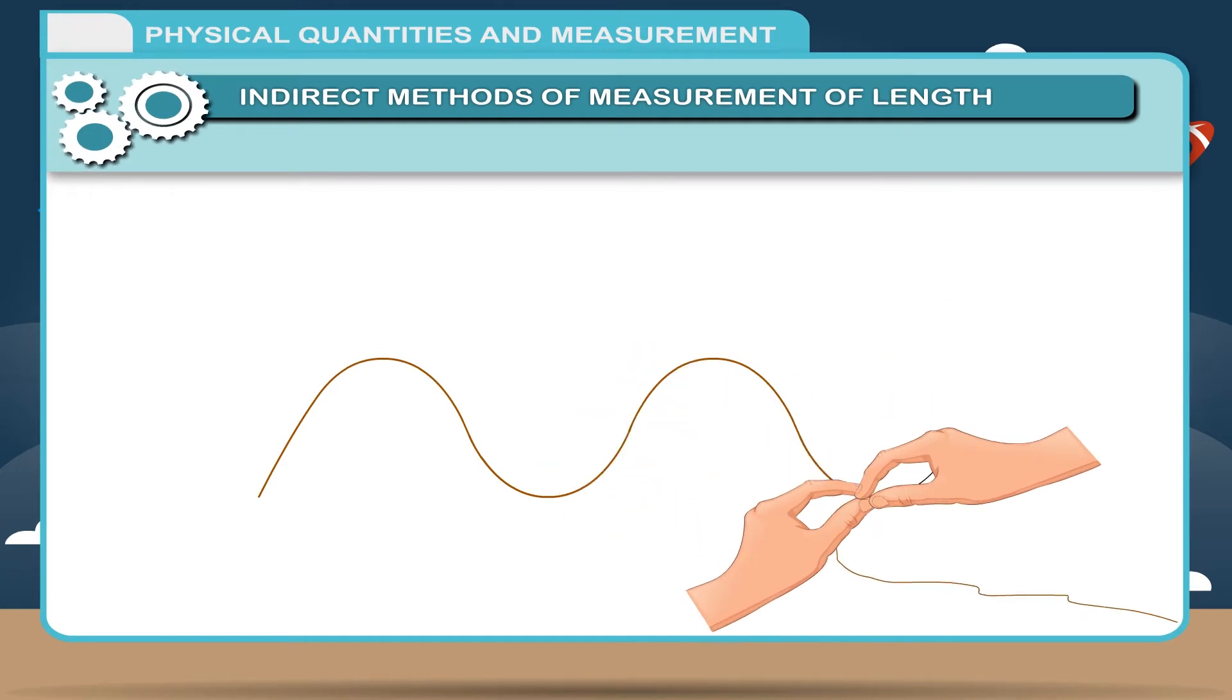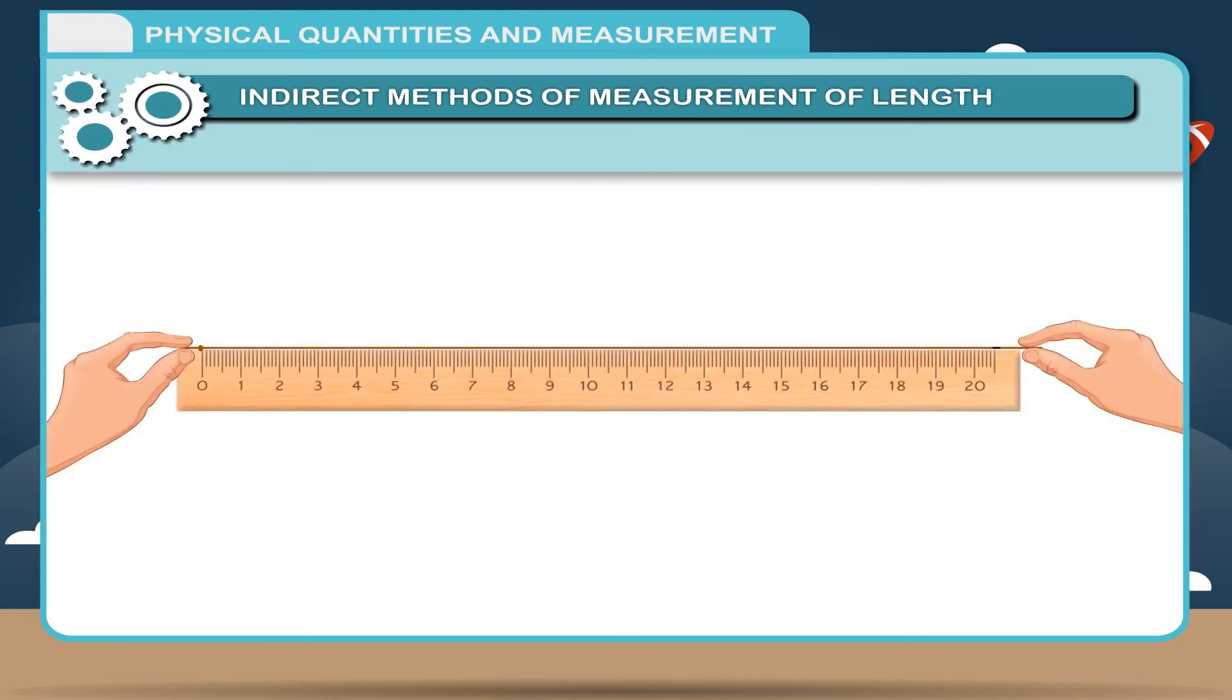Using a ball pen, put a mark on the thread where it just touches the last point on the line. Now, stretch the thread along a meter scale and measure the length from the knot to the ink mark. The length of this portion is the length of the given curved line.